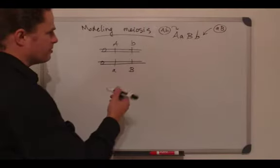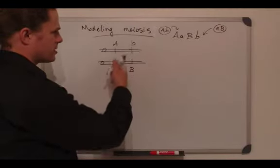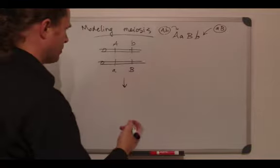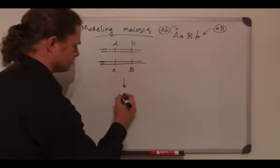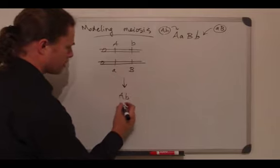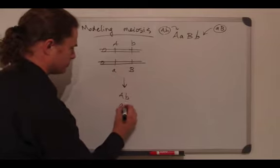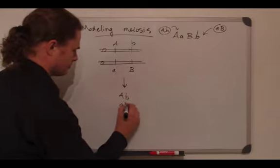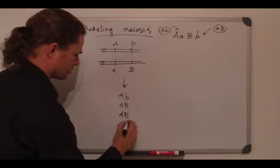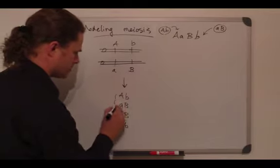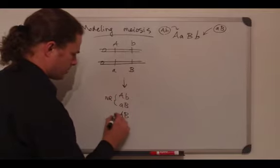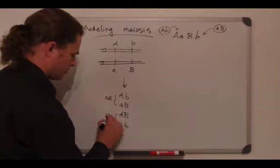As we've seen before with this dihybrid, there are four possible output gamete types or haploid products of meiosis. There are the two non-recombinant types and then the two recombinant sets.